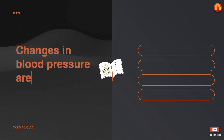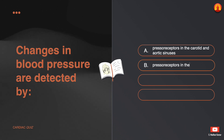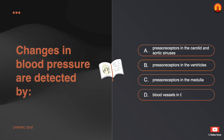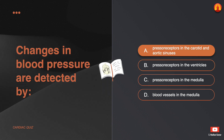Changes in blood pressure are detected by: A. Pressoreceptors in the carotid and aortic sinuses. B. Pressoreceptors in the ventricles. C. Pressoreceptors in the medulla. D. Blood vessels in the medulla. The correct answer is: pressoreceptors in the carotid and aortic sinuses.